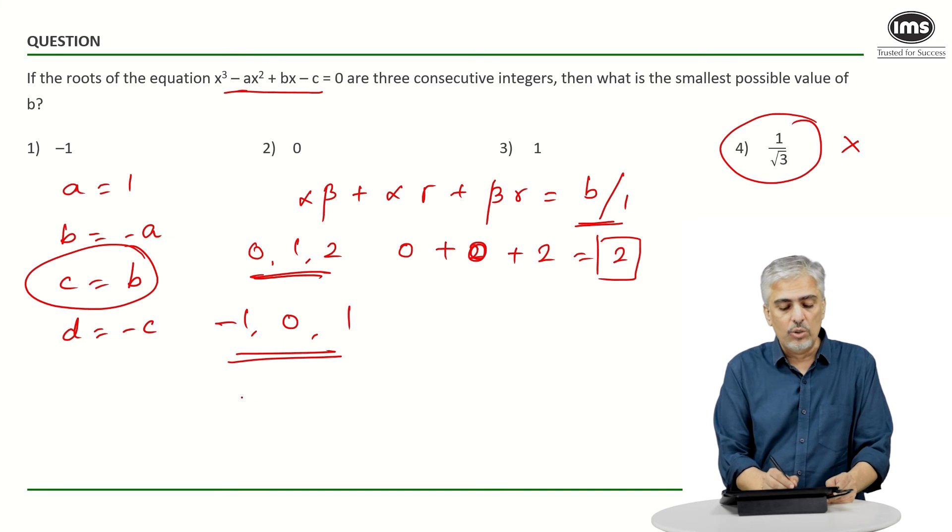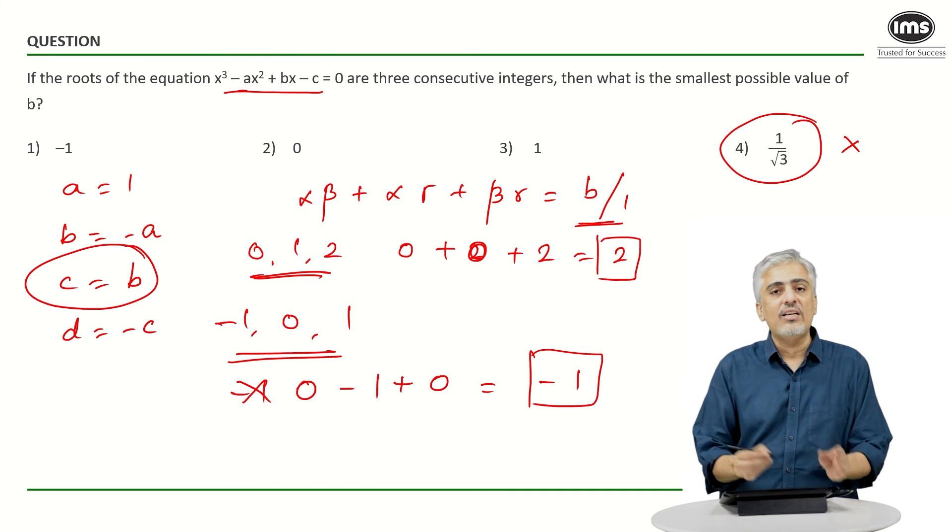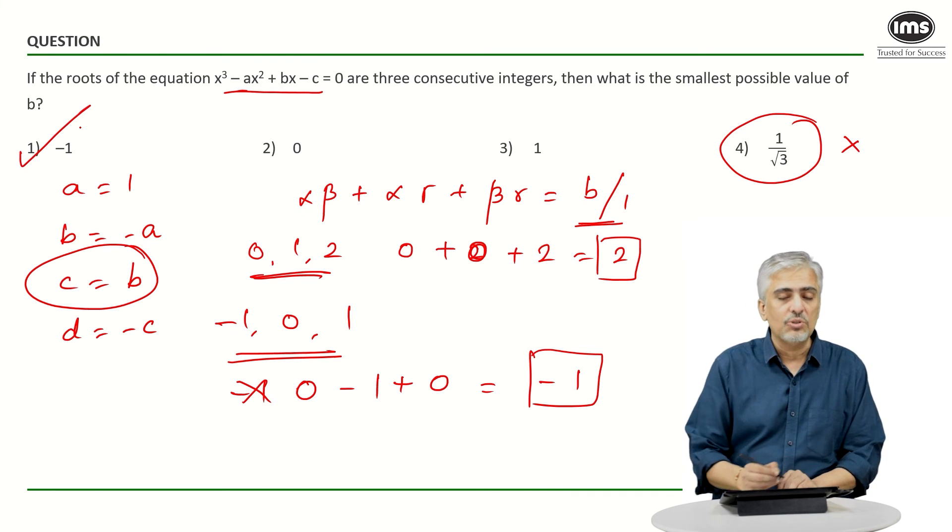Because -1 into 0 is... sorry, -1 into 0 is 0. -1 into 1 is -1. And 0 into 1 is 0. And the answer will be -1. And that will be your final answer, which is the first option.